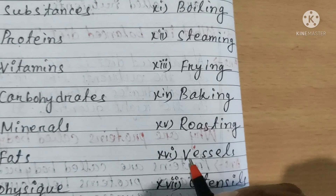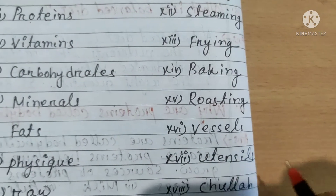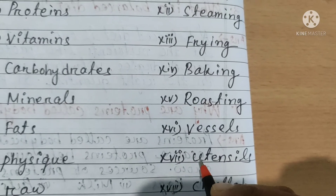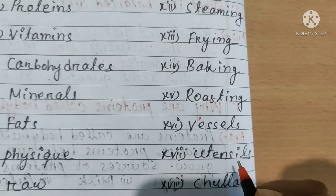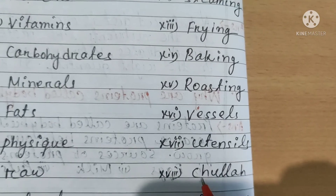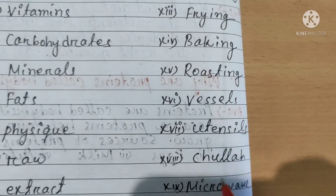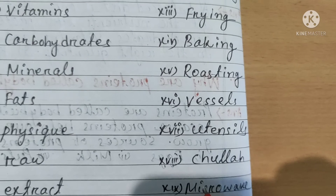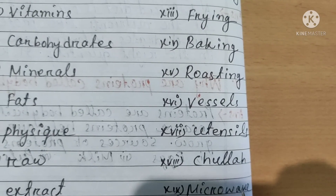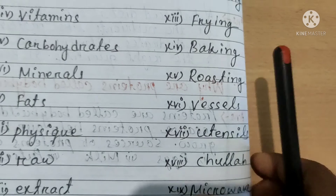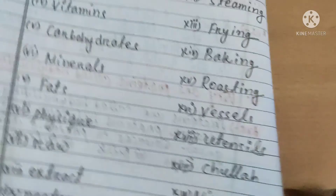Vessels — V-E-S-S-E-L-S, vessels. Utensils — U-T-E-N-S-I-L-S, utensils. Chulha — C-H-U-L-L-A-H, chulha. Microwave — M-I-C-R-O-W-A-V-E, microwave. Oven — O-V-E-N, oven.